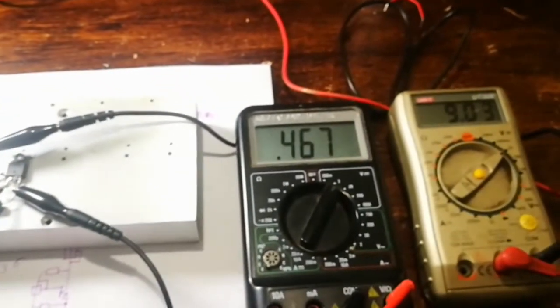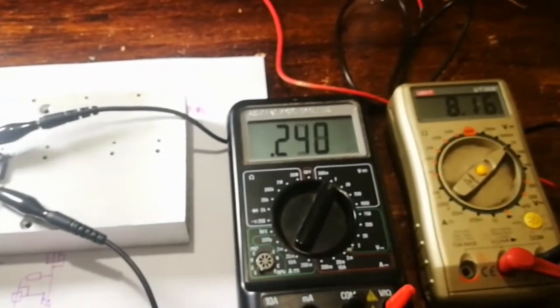So let's turn the bias down and see what happens. Let's put it down to 100 milliamps, so we want 44 millivolts.